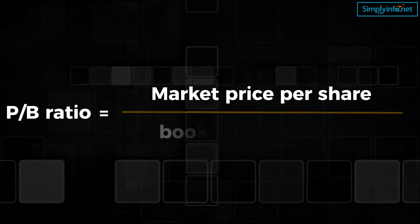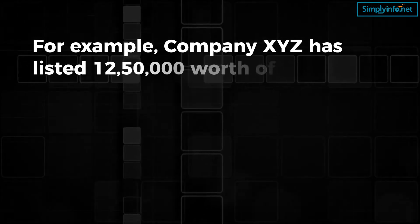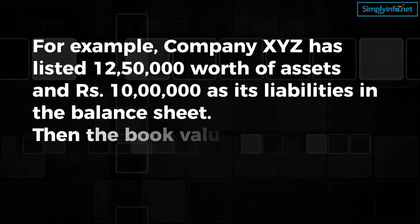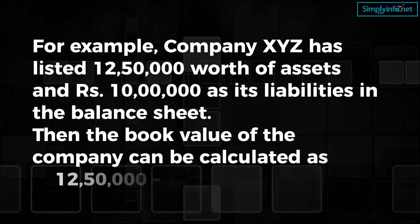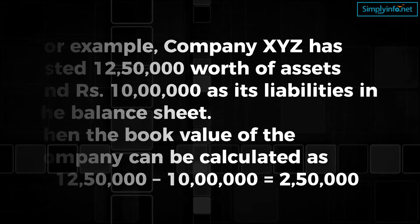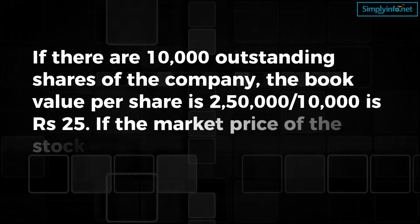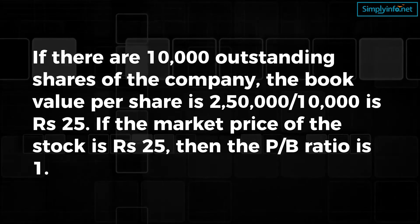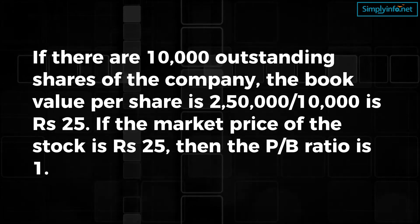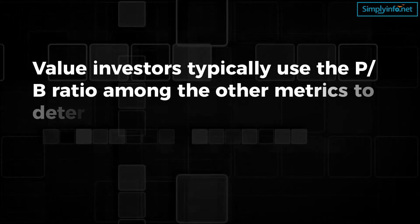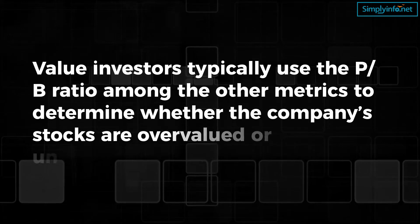The formula to calculate the PB ratio is: market price per share divided by book value per share. For example, company XYZ has listed Rs 12,50,000 worth of assets and Rs 10,00,000 as liabilities. The book value is Rs 12,50,000 minus Rs 10,00,000, which equals Rs 2,50,000. With 10,000 outstanding shares, the book value per share is Rs 25. If the market price is also Rs 25, then the PB ratio is 1. Value investors use the PB ratio to determine whether a company's stock is overvalued or undervalued.